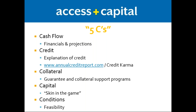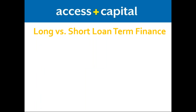The fifth C is conditions — for a startup this is where your business plan comes in. For an existing business, conditions are about the current environment for the request: Is there a contract that's come up? Why are you hiring new employees? What's the need? For an existing business a formal business plan is not required, but it would be covered in the conversation with your loan officer, just describing the conditions around the loan request.